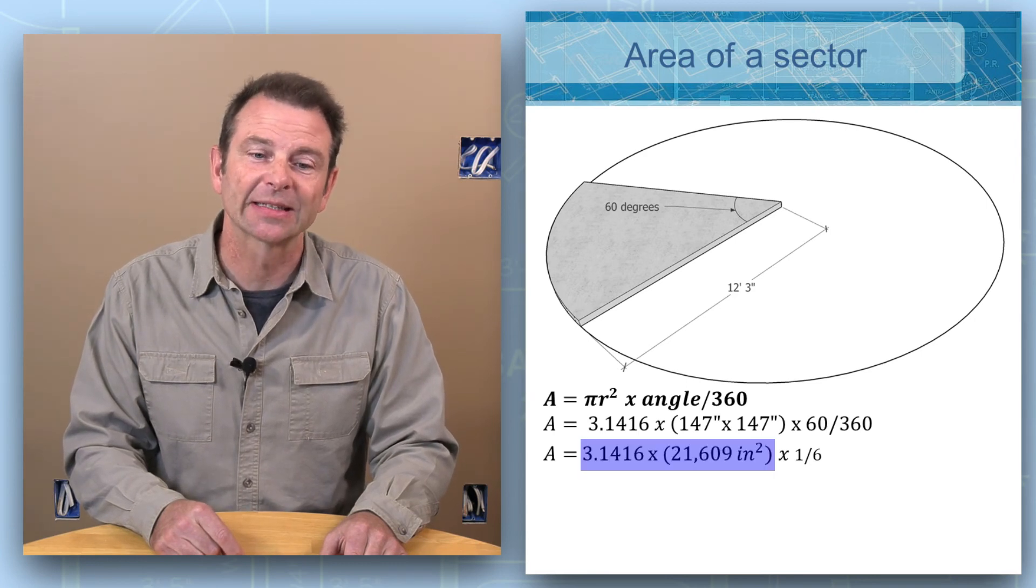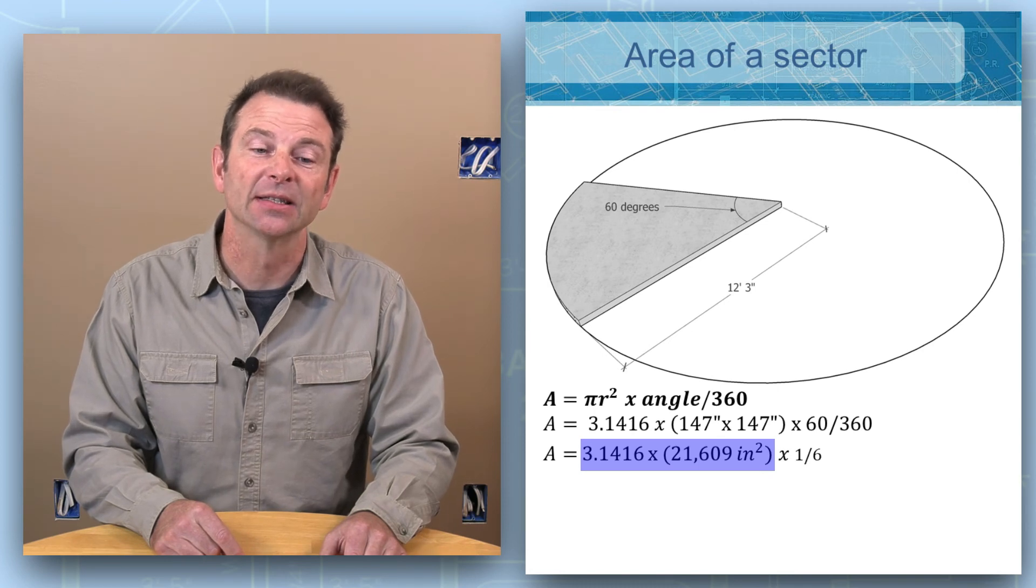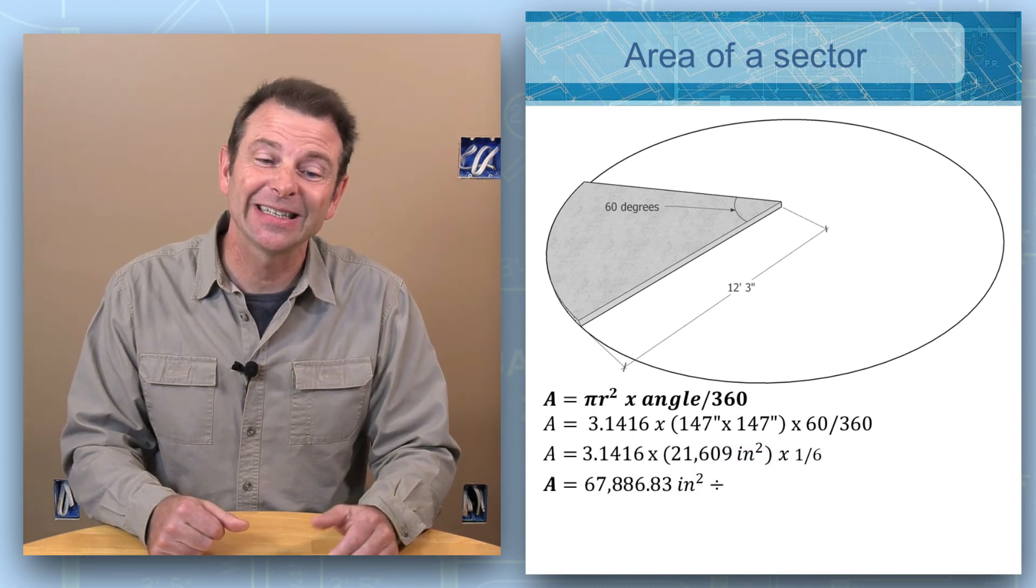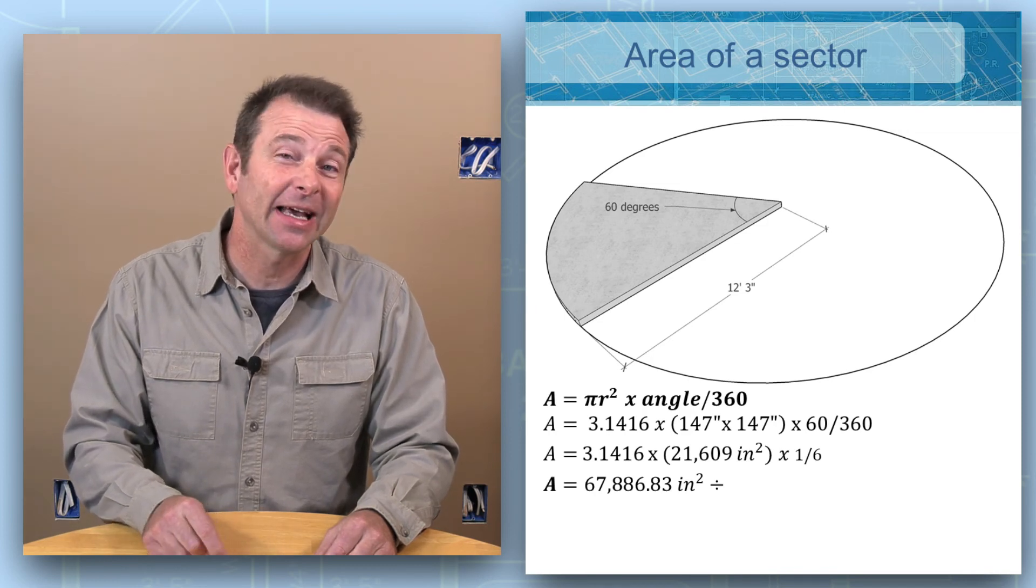If we multiply 3.1416 times 21,609 square inches, we come up with 67,886.83 square inches. We can multiply that times our 1/6, or we can divide that by 6 over 1. We can invert that fraction and now we have a whole number to divide it by.